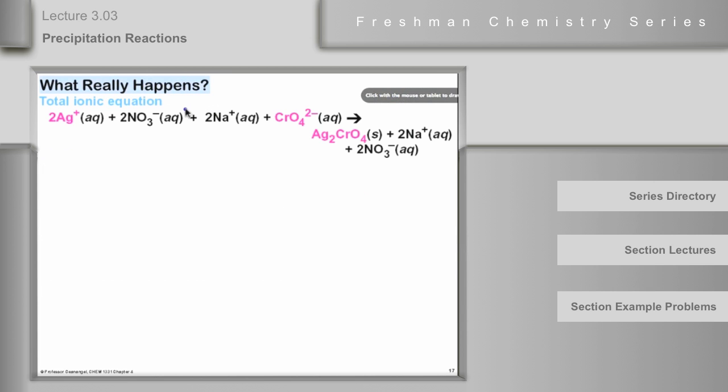What really happens? What really goes on when we mix these two solutions together? The total ionic equation gets us started here. And if you notice in red here are the ions that actually react: silver ions, chromate ions, and they form silver chromate, which is not shown as ions because it's a solid.